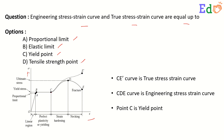This point C is called the yield point. The curve from C to E represents the true stress-strain curve, and C-D-E is the engineering stress-strain curve.